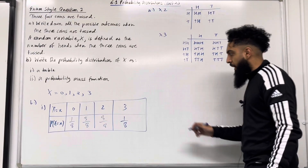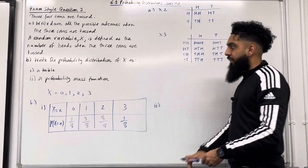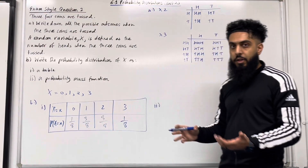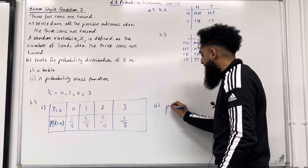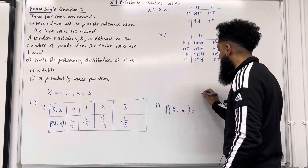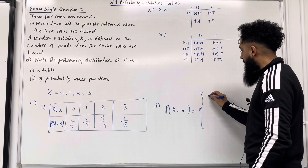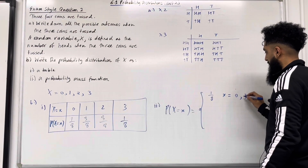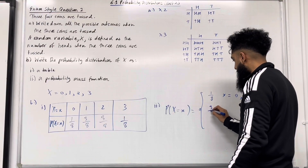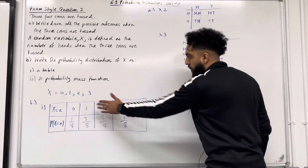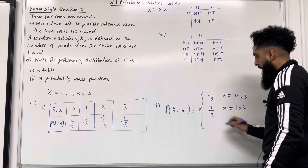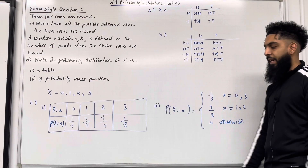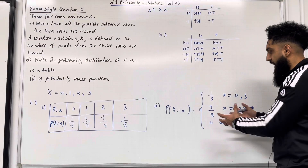In part 2 we want to express the probability distribution of X as a probability mass function. P(X = x) equals 1/8 if x = 0 or x = 3, and 3/8 if x = 1 or x = 2, and 0 otherwise. That completes exam style question 2.